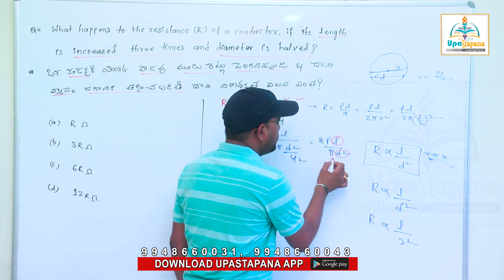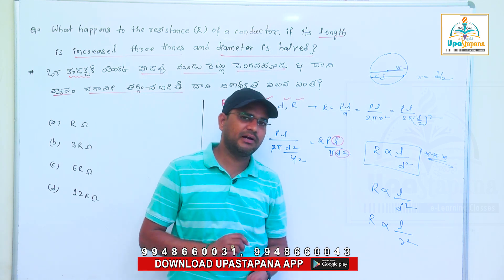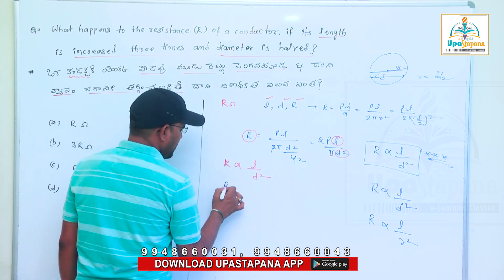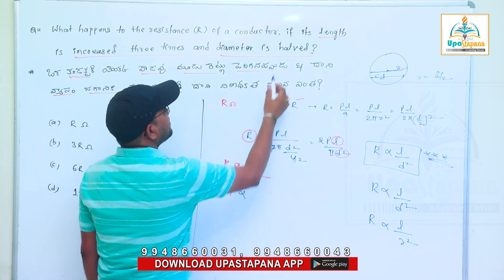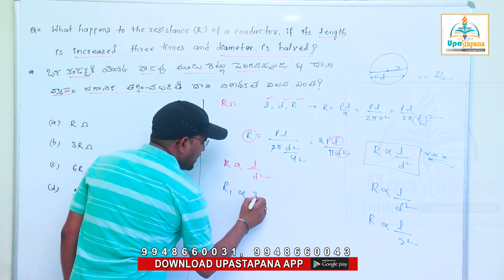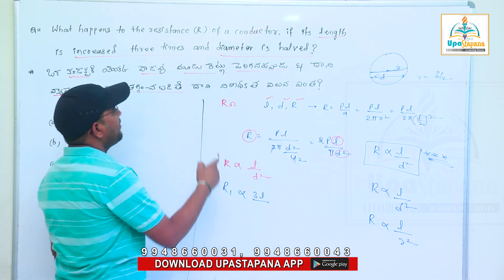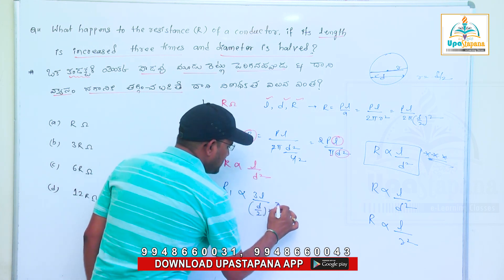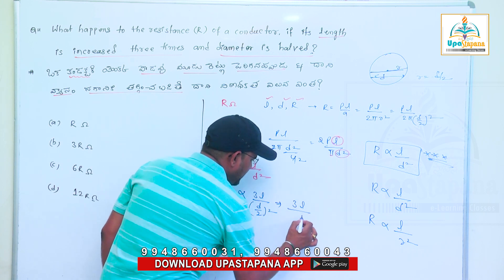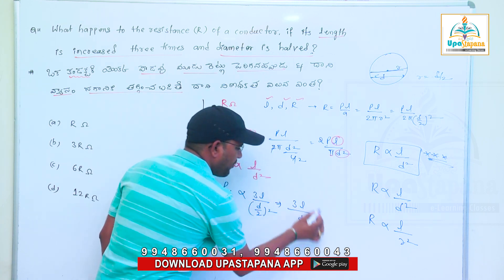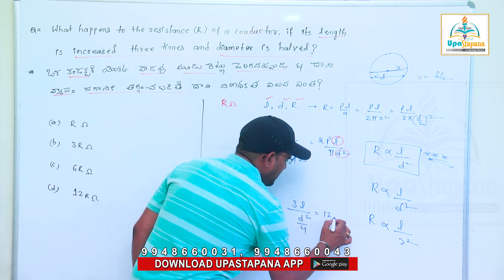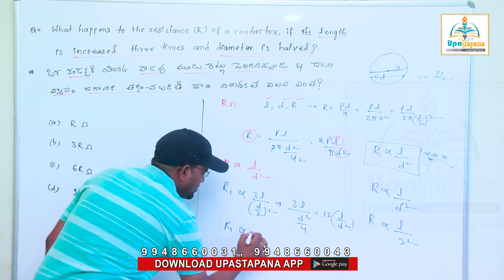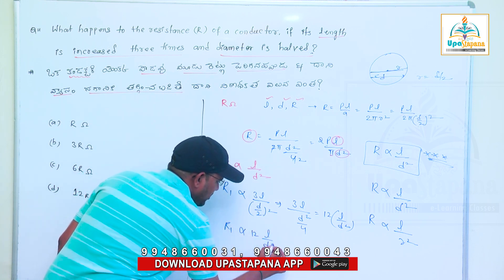The value of pi and rho are constants and we can't cancel them out. So let's find the new value R1. The new length is 3L and the new diameter is D by 2. Substituting: R1 is proportional to 3L divided by (D/2) squared, which is 3L divided by D squared by 4, giving 12L by D squared. So R1 is directly proportional to 12L by D squared.